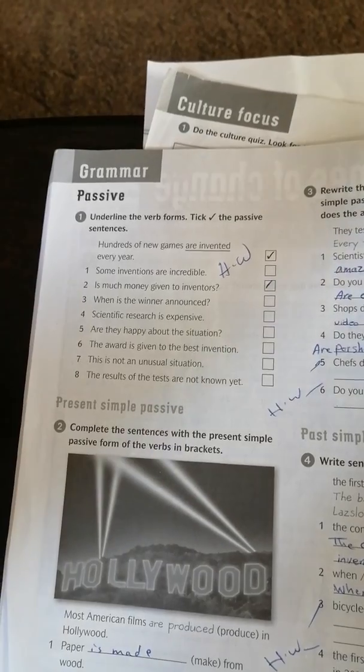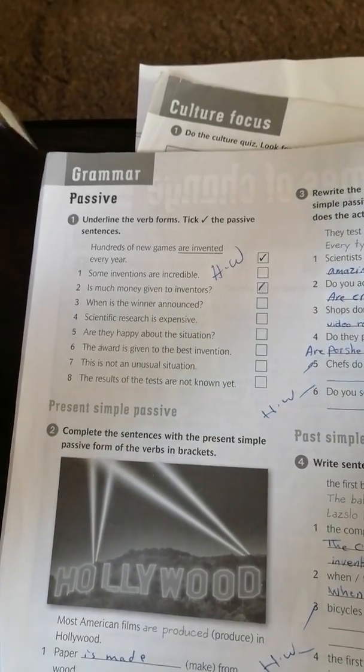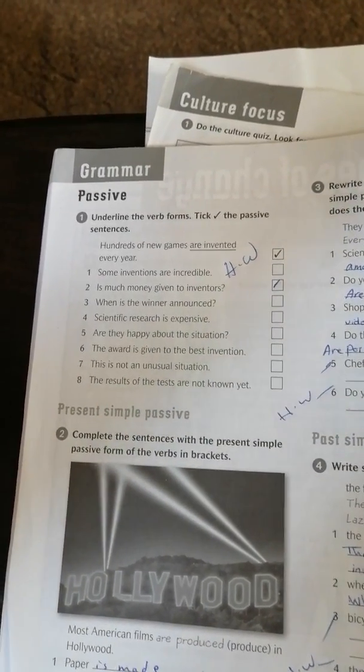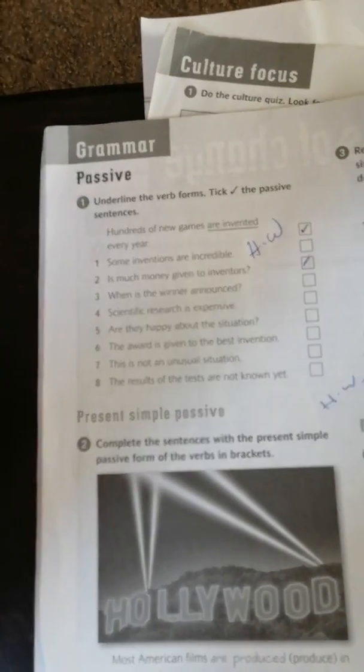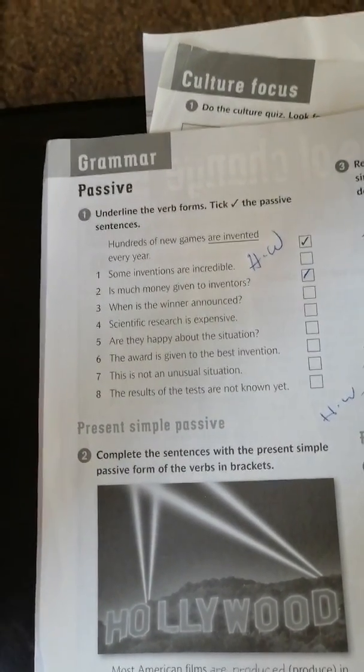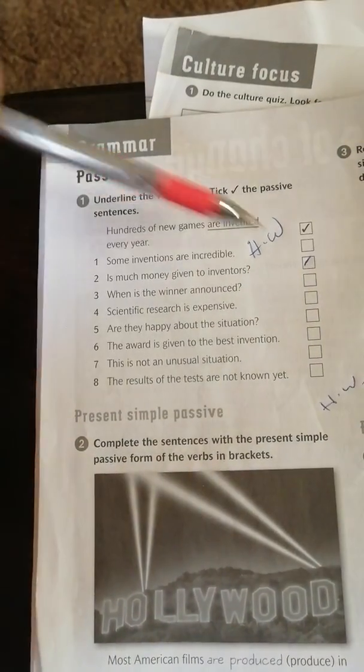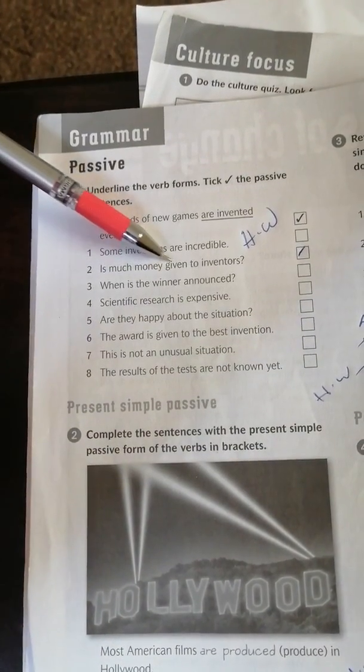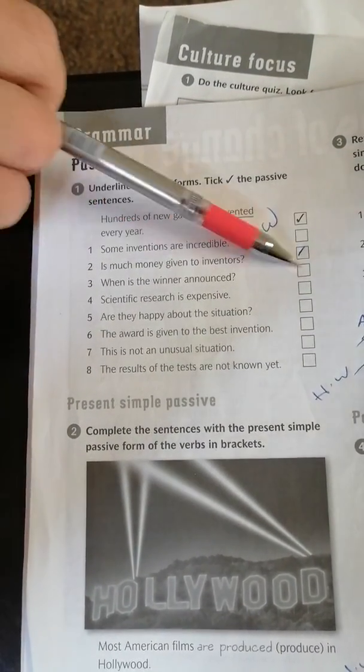Continuing with our workbook passive. Underline the passive form, tick the passive sentences. You have to tick the passive sentences as I do. Is much money given to inventors? This is a passive sentence, so I tick it.